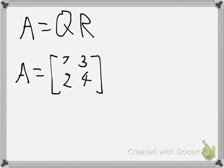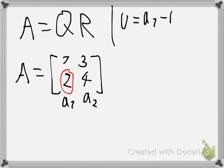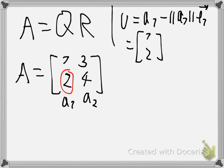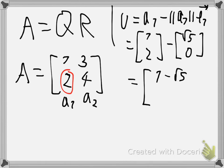So if I want to eliminate this element here using the Householder transformation, I would find the vector u, which would be the first column vector of A. So let's call the column vectors a1 and a2. u would be a1 minus the length of a1 times e1, so this would be (1, 2) minus sqrt(5) * (1, 0), giving (1 minus sqrt(5), 2). Here e1 is the unit vector of the first dimension.